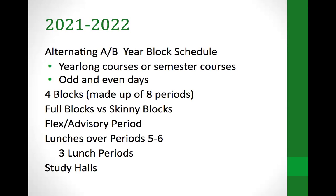We anticipate hopefully bringing back clubs and maybe assemblies — it's all dependent on where we are as we enter the next school year. Lunches will still be over periods five and six, and we hope to go back to three lunches instead of four. Study halls will be held wherever the student does not have a class scheduled, so a student with seven and a half credits could have either a full block study hall half a year or a skinny study hall the full year.